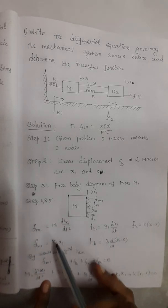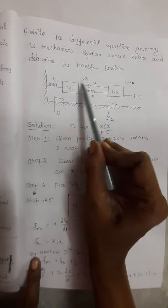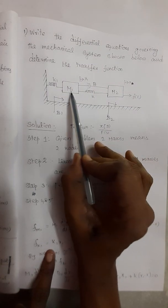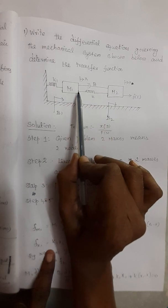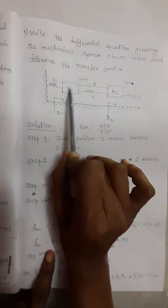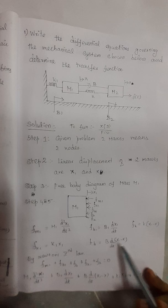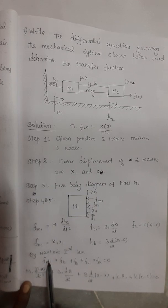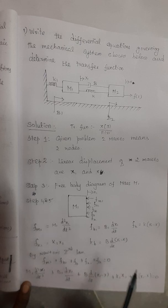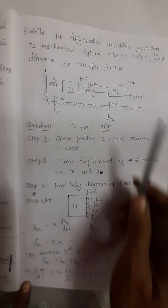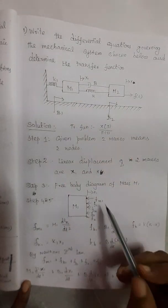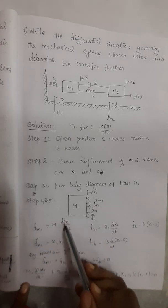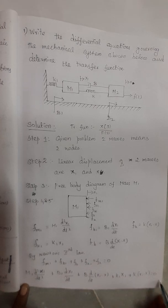For K1 — which is connected between the reference and Mass 1 — the force term is K1·X1 (only one displacement). For spring K — connected between M1 and M2 — the term is K·(X1 − X), since we are writing for M1. According to Newton's second law, all opposing forces equal the applied force. Since the applied force on Mass 1 is zero, the sum of all five opposing forces equals zero: M1·(d²x1/dt²) + B1·(dx1/dt) + B·(d/dt)(X1−X) + K1·X1 + K·(X1−X) = 0.